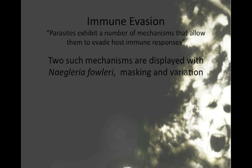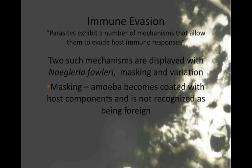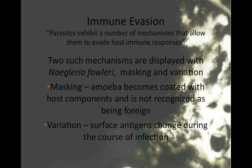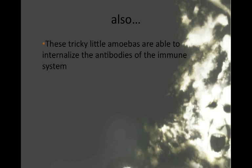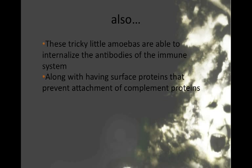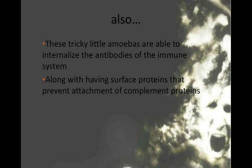Masking and variation. Please do tell us about it, Lucy my dear. In masking, the amoeba becomes coated with the host's components and is not recognized as being foreign. Then, with variation, the surface antigens of the amoeba change during the course of infection, which makes this thing rather tricky to get a hold of. Also, these tricky little amoebas are able to internalize the antibodies of the immune system.